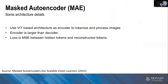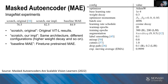For architecture details, MAE uses a ViT-based architecture because ViT tokenizes patches of the image as items in a sequence, which perfectly fits masking and reconstruction requirements. Normally the encoder is larger than the decoder, because we only need the encoder for feature extraction. The loss function is MSE between the hidden tokens and the reconstructed tokens, applied only on hidden tokens. Experiments on ImageNet show significant improvements over the original ViT-Large results.